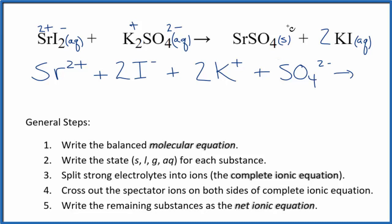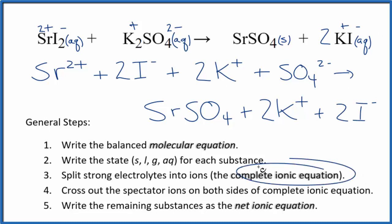For net ionic equations, we don't split solids apart. So we'll just have SrSO4, that's strontium sulfate. And then we said positive, negative. So two potassium ions and two of those iodide ions, I-. This is the complete ionic equation.